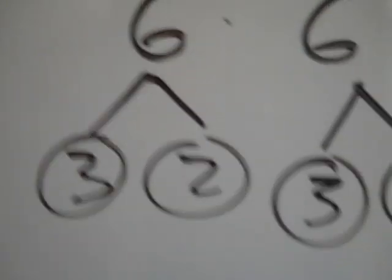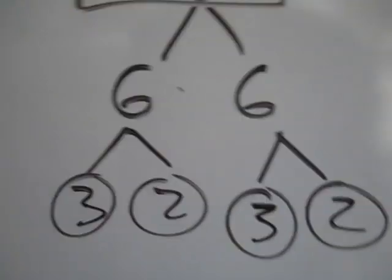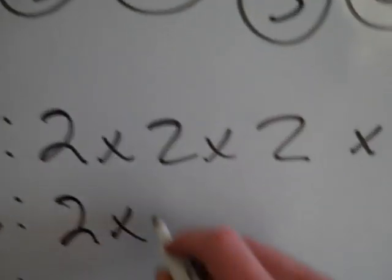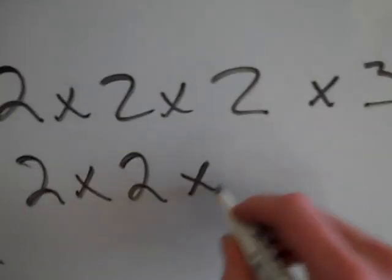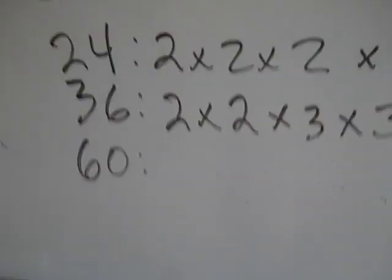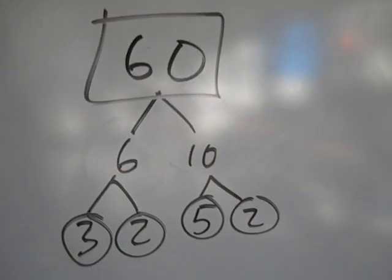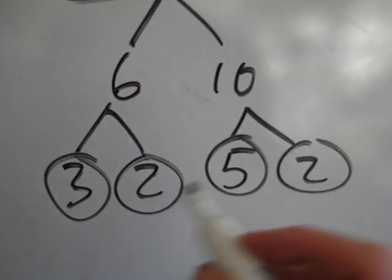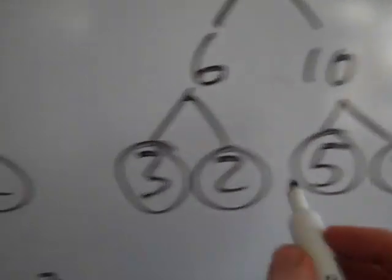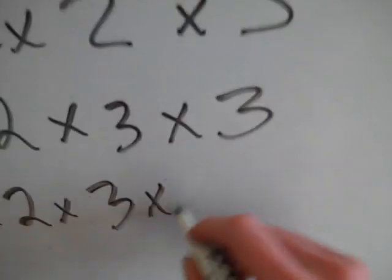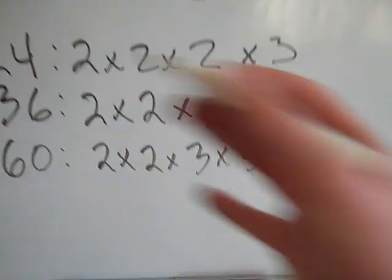The prime factorization of 36 was 2 times 2 times 3 times 3 if I put it in order — it's easier if you put it in order. So there were two 2's and then two 3's. And then the prime factorization for 60 — you can see I did 6 times 10 and broke those down. There were two 2's: 2 times 2 times 3 times 5. So here are my three prime factorizations.